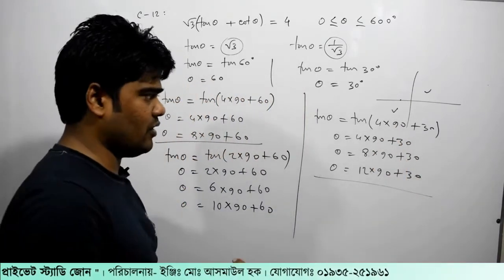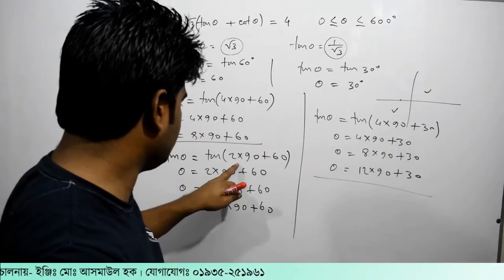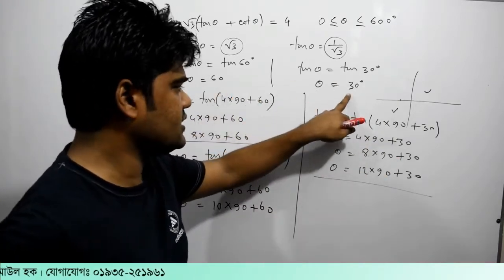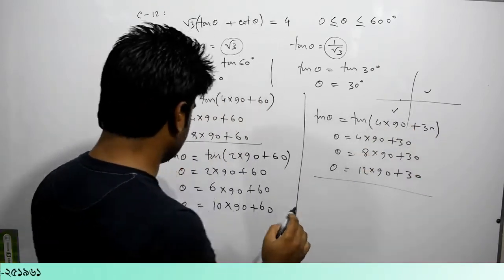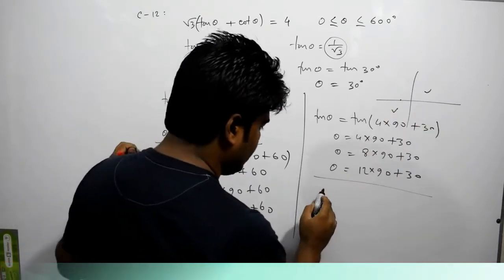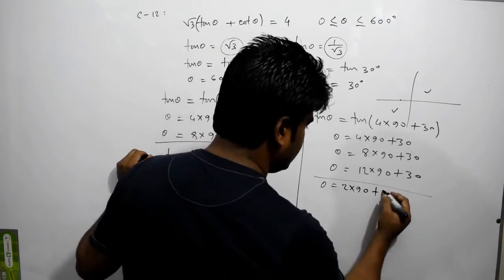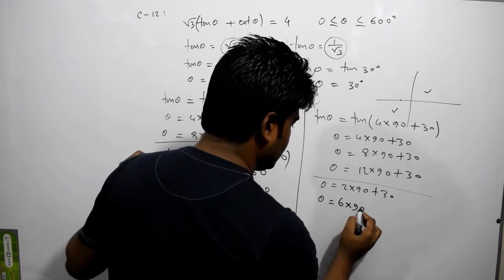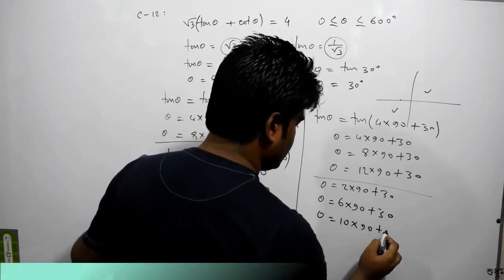And I will not write. I will write it. Because I will write 4 times 90 plus 60. This is 2 times 90 plus 60. I will write theta equal to 60. I will write tan theta. Please write about it. I will write 10 times 90 plus 30, and theta equal to 2 times 90 plus 30. 3 times.